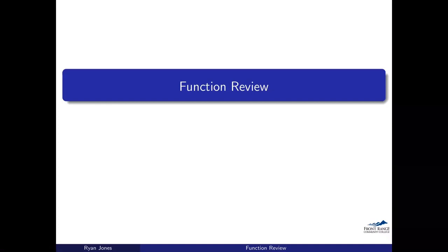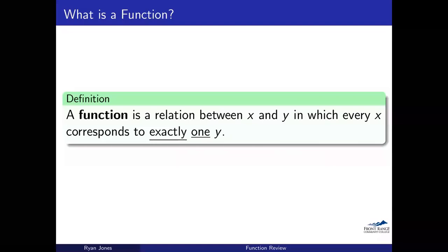Let's go ahead and get started. We will look at the definition of a function. A function is a relation between x and y — two variables — where every x has to correspond to exactly one y. You're allowed to have y correspond to multiple x's, but every x must correspond to exactly one y. We'll keep coming back to this definition as we see graphs and examples, because it's easy to get tripped up when looking at a graph.